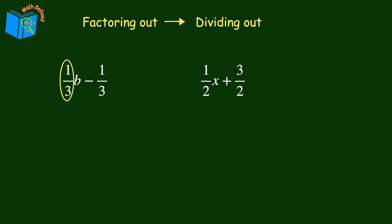Now, what we want to do is divide it out from both terms. So we'll divide one-third b by one-third and negative one-third by one-third. We know that dividing one-third out of one-third b, the one-thirds will cancel each other out, leaving the variable b. And the negative one-third divided by one-third will cancel out, and we are left with b minus 1.